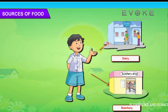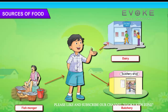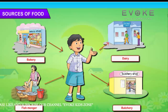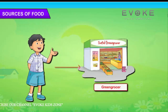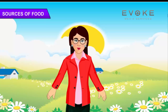We get meat from the butcher. We get fish from the fishmongers. We get bread and cakes from the bakery. We get vegetables and fruits from the greengrocer. The food we eat is prepared at our home in the kitchen.